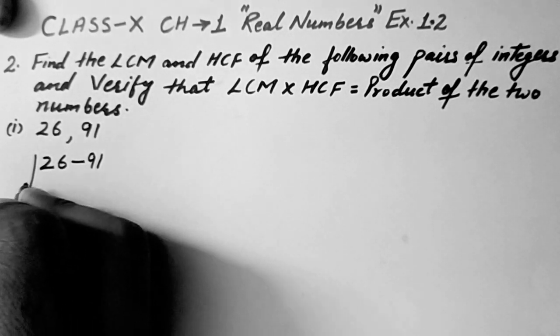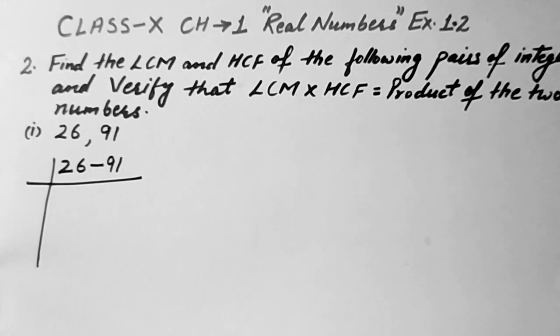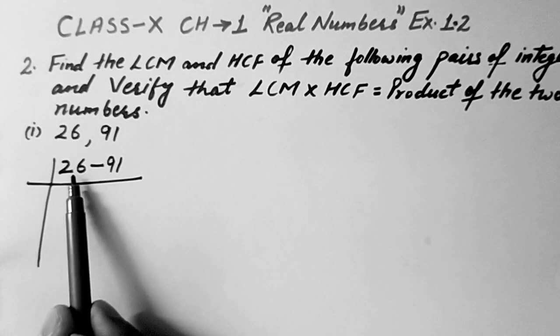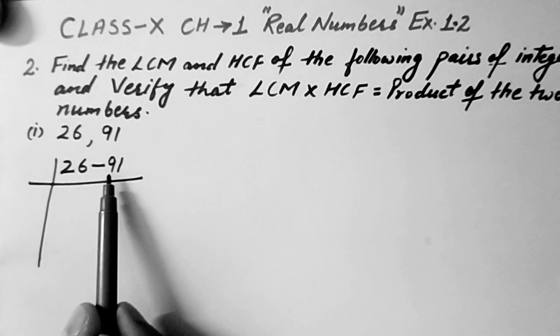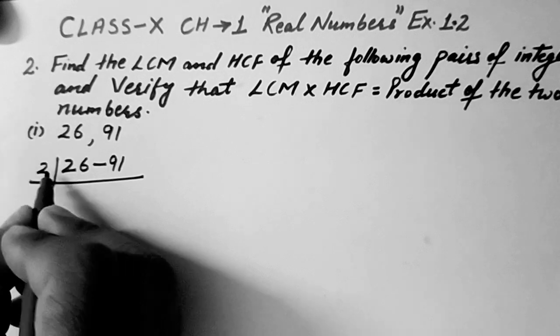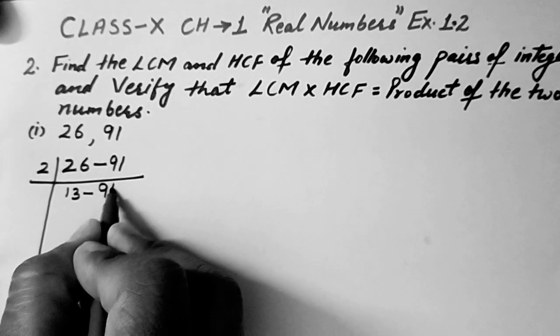So this is 26 and then 91. We will find the LCM of these two numbers. So first of all we will see that 26 is going with 2 and 91 is not going with 2. So we will divide with 2. Two 13s are 26 and 91 is not going with 2. We will write as it is.